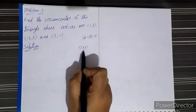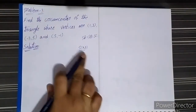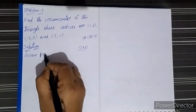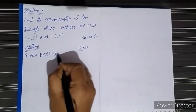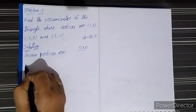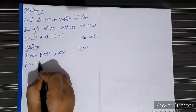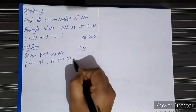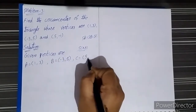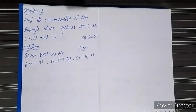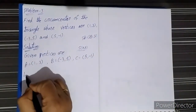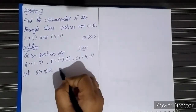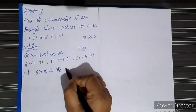For the given data, the given vertices are: let them be A, B, C — A equals (1, 3), B equals (-3, 5), and C equals (5, -1). Then let capital S(x, y) be the circumcenter of the triangle ABC.